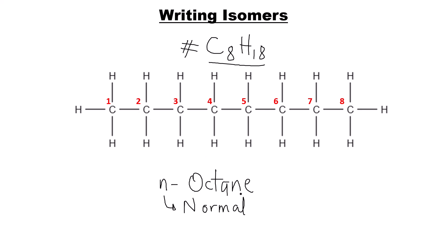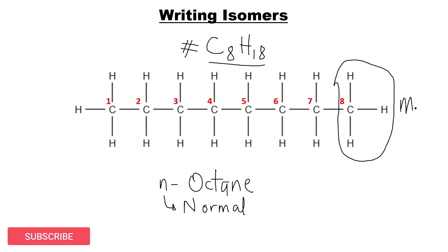After writing the first isomer, n-octane, the next thing to do is imagine cutting the end of the chain. This end carbon — CH₃ — is a methyl group. After cutting the methyl group you are left with only seven carbon atoms. Now you position this methyl group anywhere on the remaining seven carbons except the first and last ones, so you can place it on carbons two through six — each position gives a different isomer.